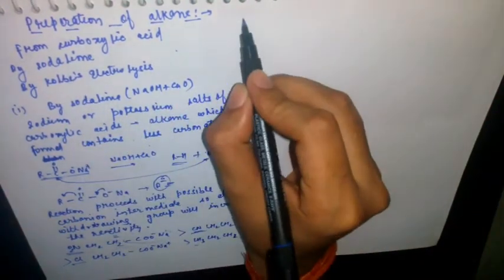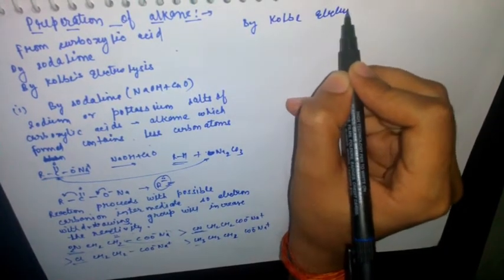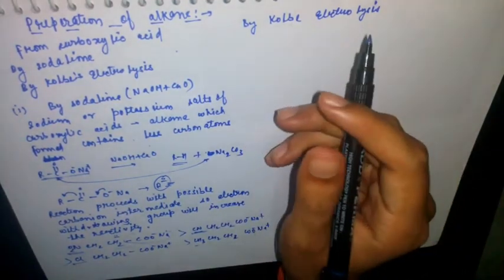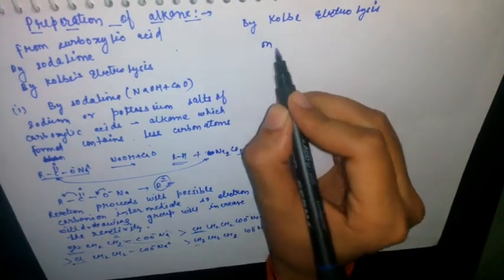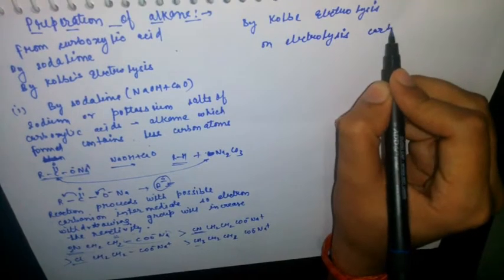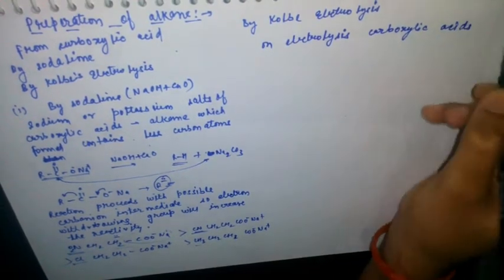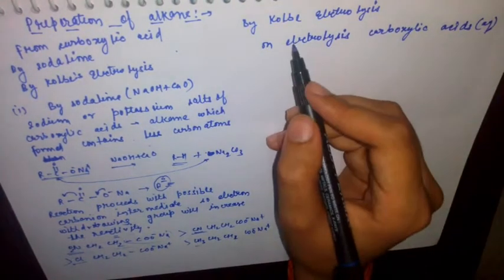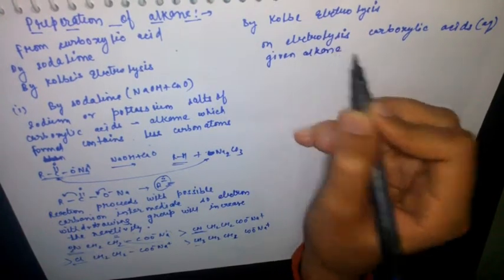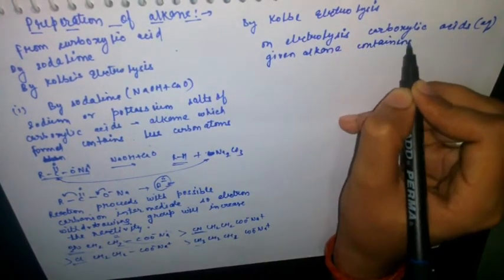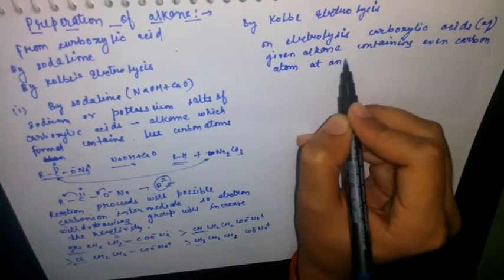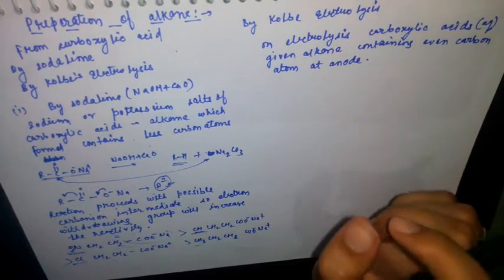Now let's talk about Kolbe electrolysis. In Kolbe electrolysis, an aqueous solution of the sodium or potassium salt of a carboxylic acid on electrolysis gives an alkane containing an even number of carbon atoms at the anode.